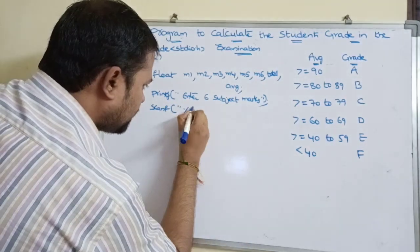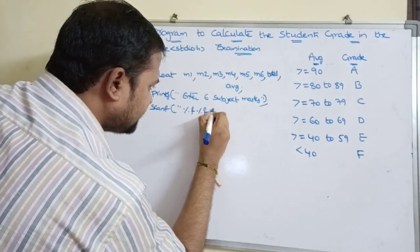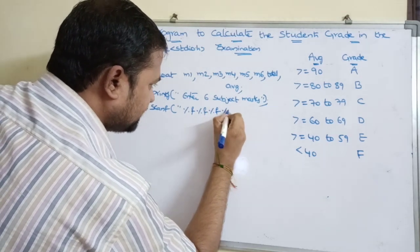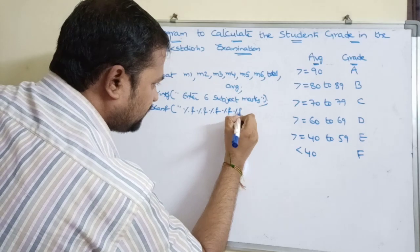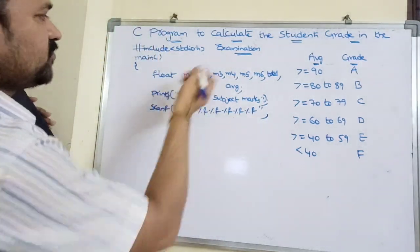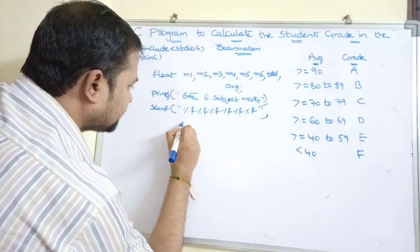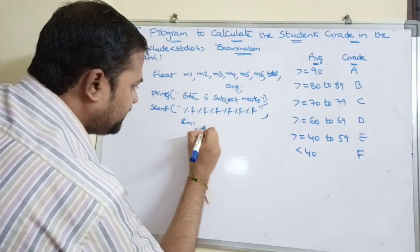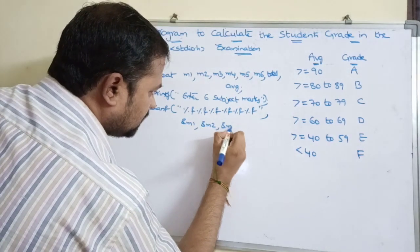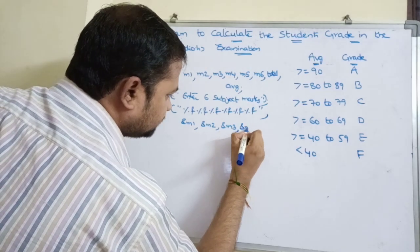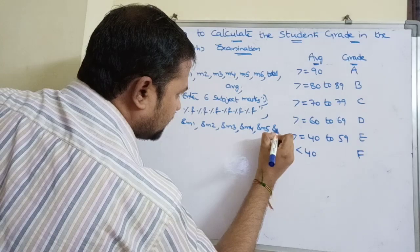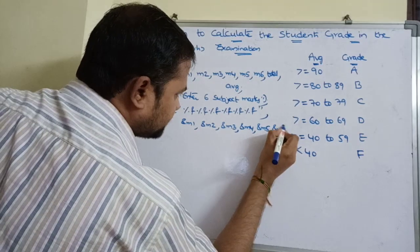So the scanf statement uses six %f format specifiers, with the address variables &M1, &M2, &M3, &M4, &M5, and &M6 to read all six subject marks.